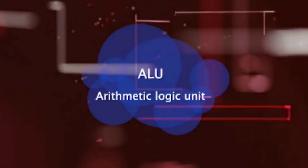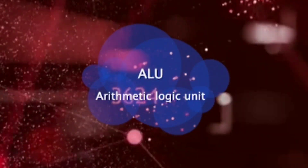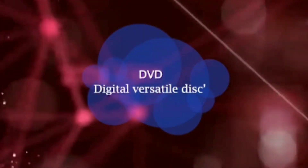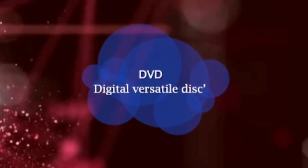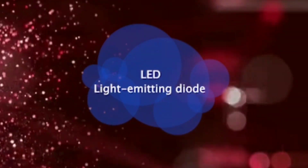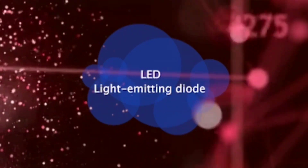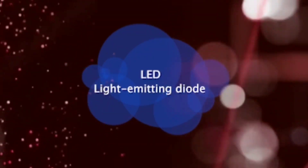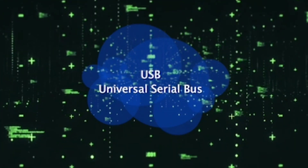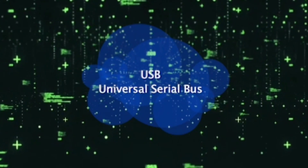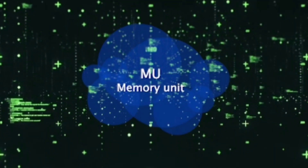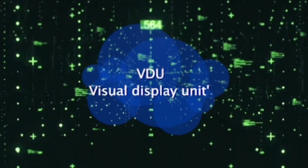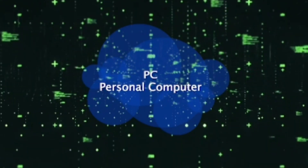ALU — Arithmetic Logic Unit. DVD — Digital Versatile Disk. LED — Light Emitting Diode. USB — Universal Serial Bus. MU — Memory Unit. VDU — Video Display Unit. PC — Personal Computer.